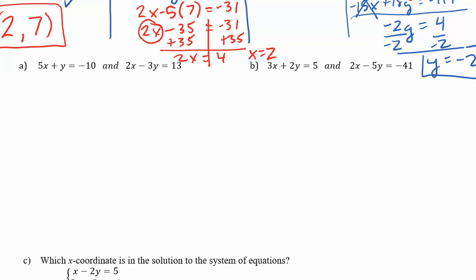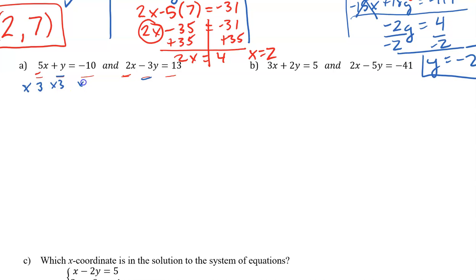So first, we see that A is in the right format: something times x plus something times y equals a number. The second equation is also in the appropriate format. My coefficient of x is 5 or 2; my coefficient of y is 1 or negative 3. In my view, it'll be easier to work with y first. By multiplying the first equation by positive 3, I will get 15x plus 3y equals negative 30. Now I have the opposite coefficient for y by only doing one multiplication.